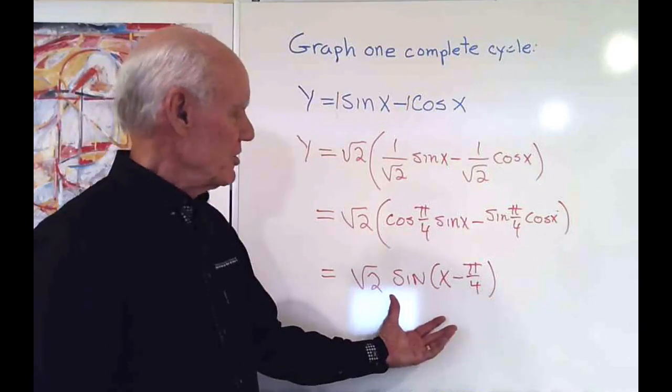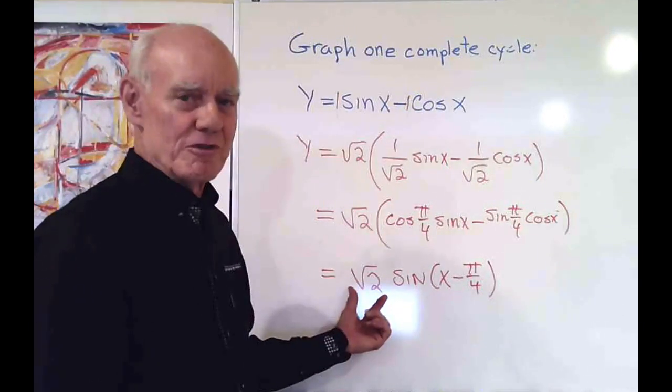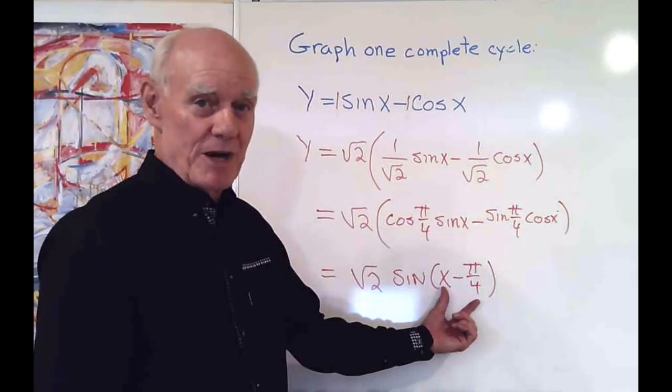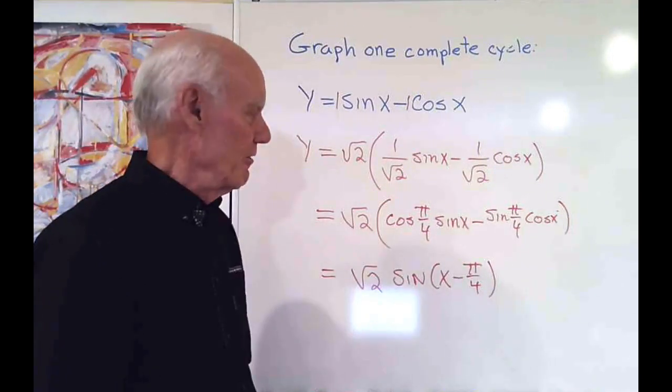So now I want to graph this function. It's going to have an amplitude of square root two and it's going to have a phase shift of positive pi over four. So the graph is going to move forward pi over four.